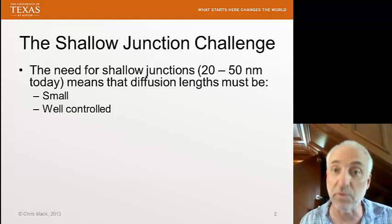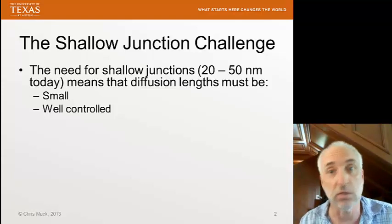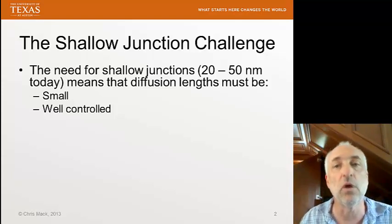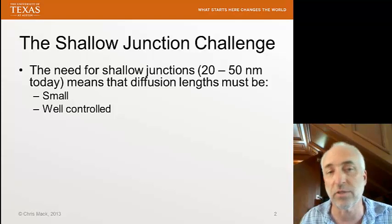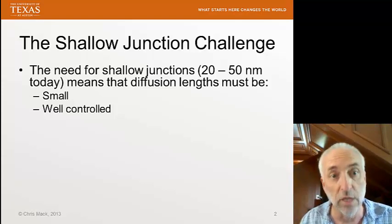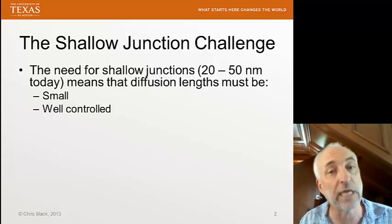Diffusion has to be well controlled because 20 plus or minus 2 nanometers is 10 percent variation, versus 200 nanometers plus or minus 2 nanometers, which is only 1 percent variation. So a shallow junction means the diffusion lengths have to be very, very well controlled.